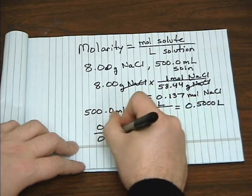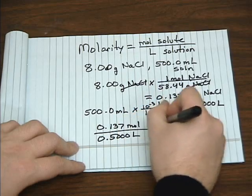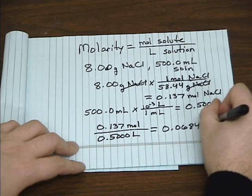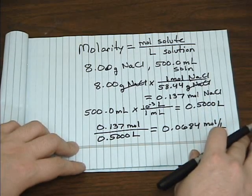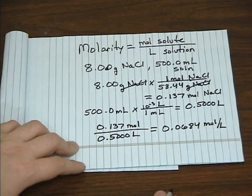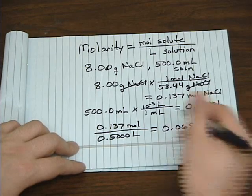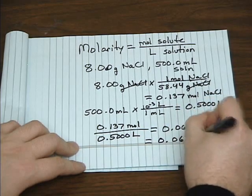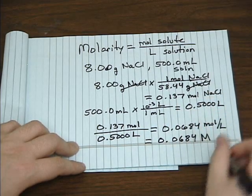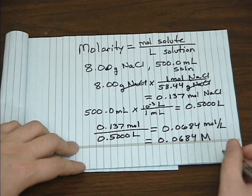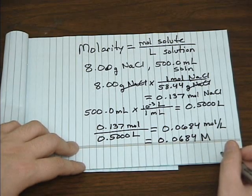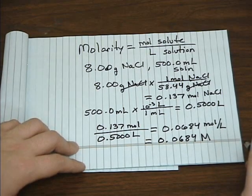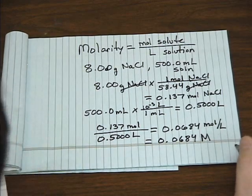If we divide the two, we get 0.0684 moles per liter. And another common way to express molarity is instead of using the mole per liter unit, we write a capital M, which stands for molar. So you have a 0.0684 moles per liter solution, or you can say you have a 0.0684 molar solution of sodium chloride.